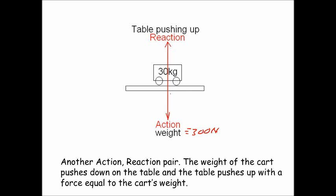Since this cart is sitting on a table and the weight acts downward, the table is actually pushing up on that cart with a force equal to the weight. The reaction force is positive 300 Newtons. Positive 300 Newtons plus negative 300 Newtons equals a net force of zero Newtons. So this object sitting on the table is said to be in equilibrium — it's not going to accelerate upward or downward. The action force is equal to the reaction force, but in opposite directions.